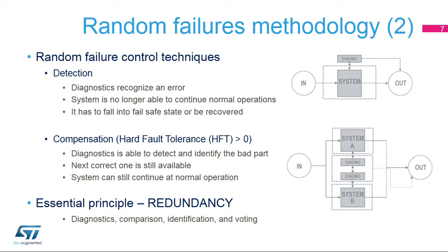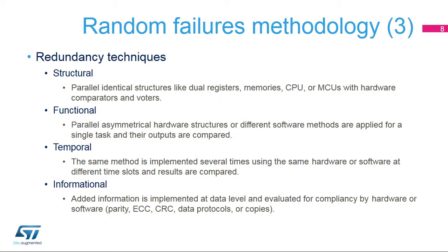Standards recognize hard fault tolerance, or HFT, as the maximum number of errors which a system can absorb while it can still continue at normal operation. In addition to specific functional testing, redundancy is the essential diagnostic principle here. Both detection and compensation techniques always require a sure level of redundancy to be efficient. Compensation is considerably more demanding than detection, as not only discrepancies but the correct state has to be identified as well. To do so, specific comparisons and voting mechanisms have to be additionally applied. The required level of redundancy can be achieved using a wide range of different software or hardware methods and techniques.